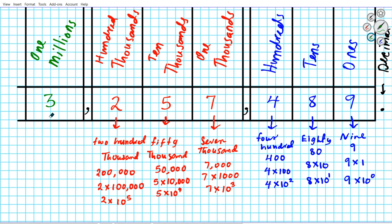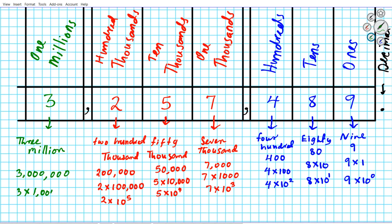Last one: we have a three in the one millions place, so this number is three million. In number form it's three million. In expanded form without exponents it's three times one million. Using exponents, since there are six zeros, it's three times ten to the sixth power.